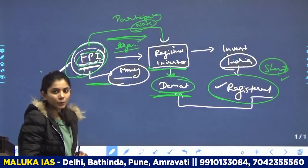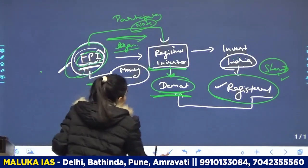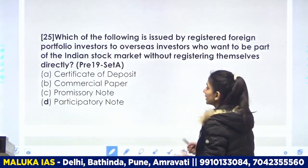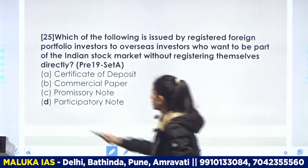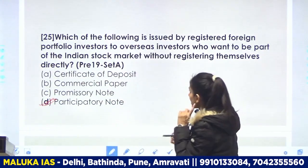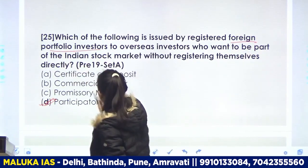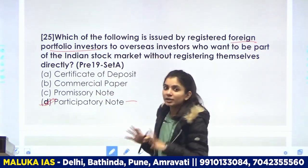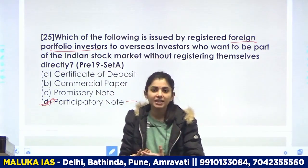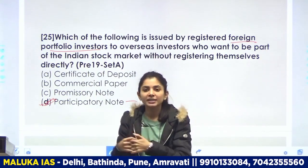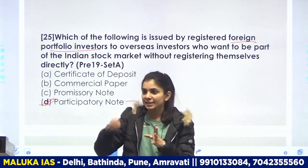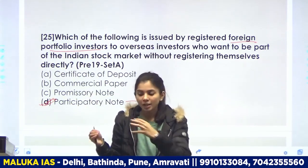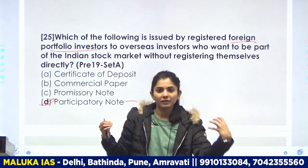यह होता है participatory note के through। Question यह पूछ रहा है कि यह किस method के through होता है — participatory note के through। FPI खुद participate करना चाहता है but register नहीं होना चाहता, complications में नहीं आना चाहता। इसलिए उनकी तरफ से कोई other registered person उनके behalf पर participate करता है और उनको participatory note देता है।